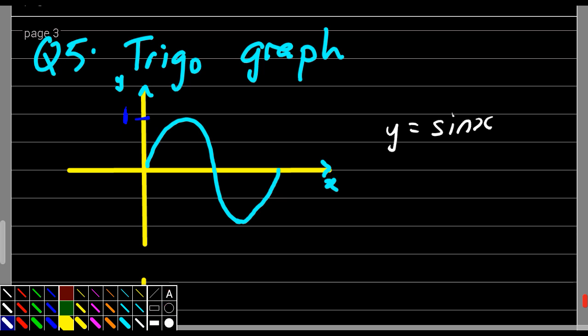Negative 1. So, I'll use white color. This is negative 1. Now, we learn the first thing called amplitude. Now, what does amplitude mean?